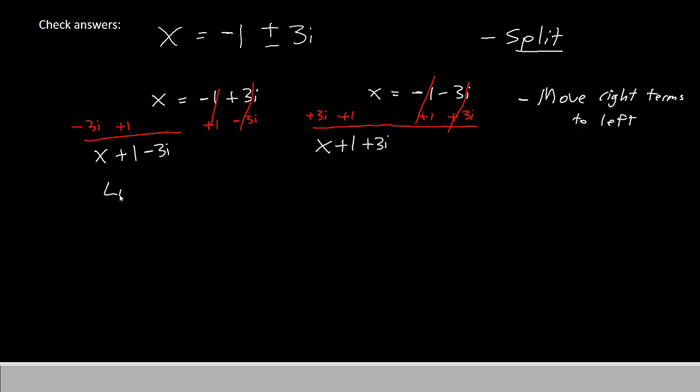So we can say our linear version of the quadratic we started with is (X plus 1 minus 3i) times (X plus 1 plus 3i). And so that's how you change a quadratic that you ordinarily wouldn't be able to factor into two linear terms. Notice that both of them have imaginary terms where one of them is negative 3i and one of them is positive 3i.